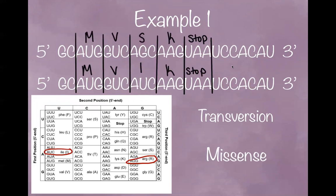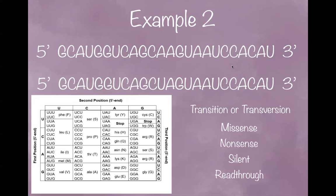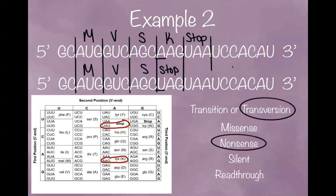Here is another example. Pause the video and see if you can work through this problem. Hopefully you found that the A purine base changed to the U pyrimidine base, making this a transversion. And since it changed the amino acid to a stop codon, it's a nonsense point mutation.